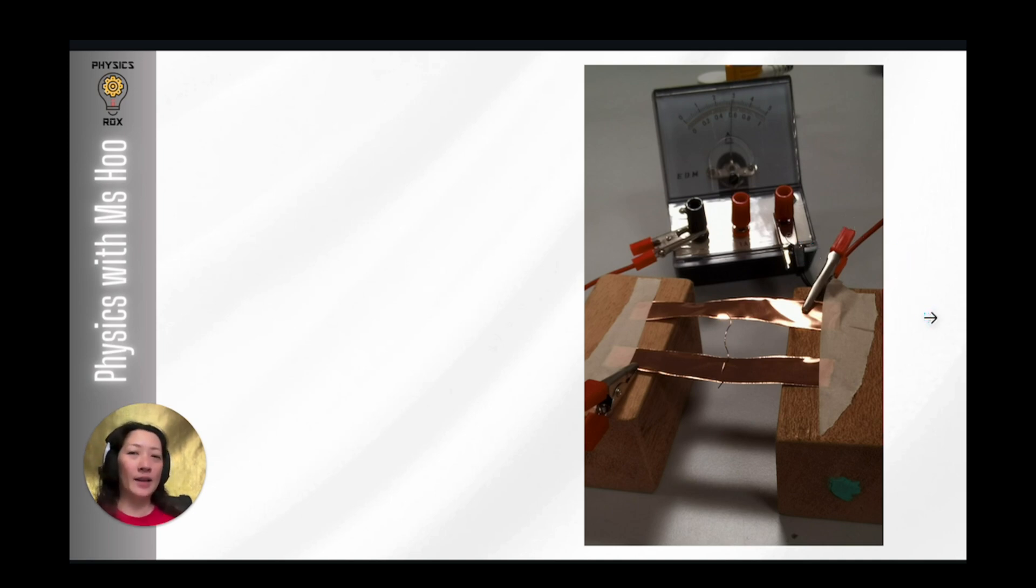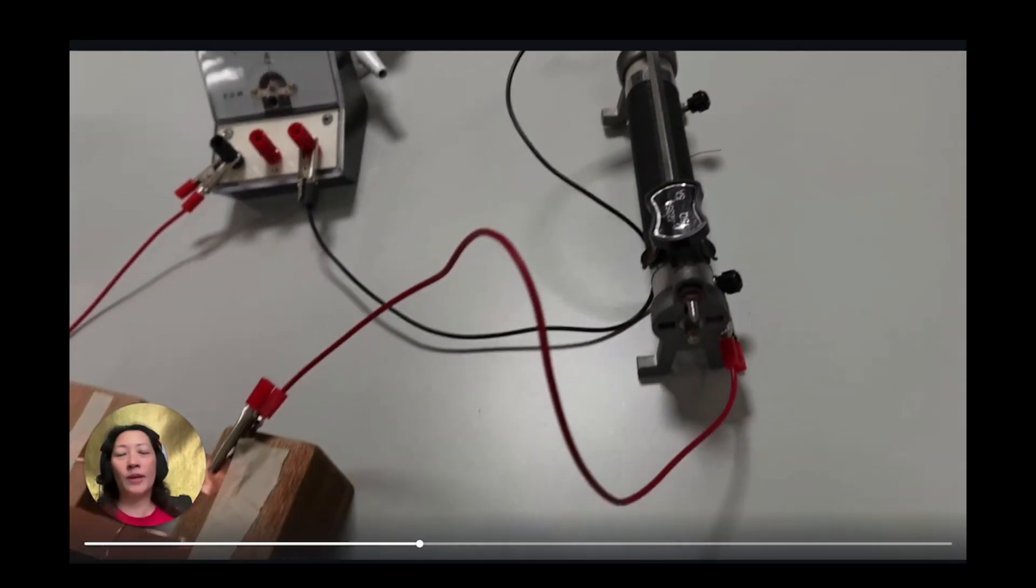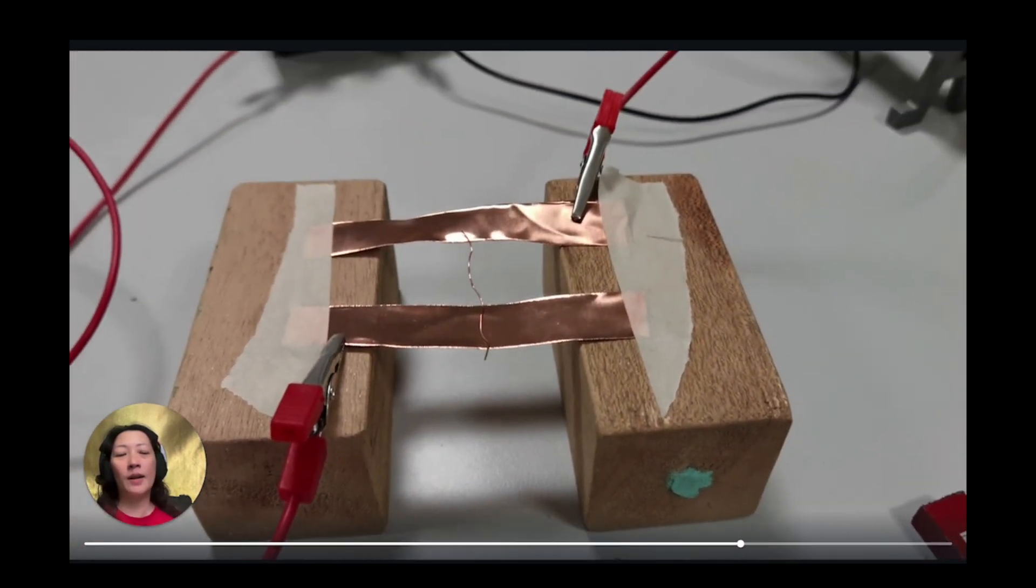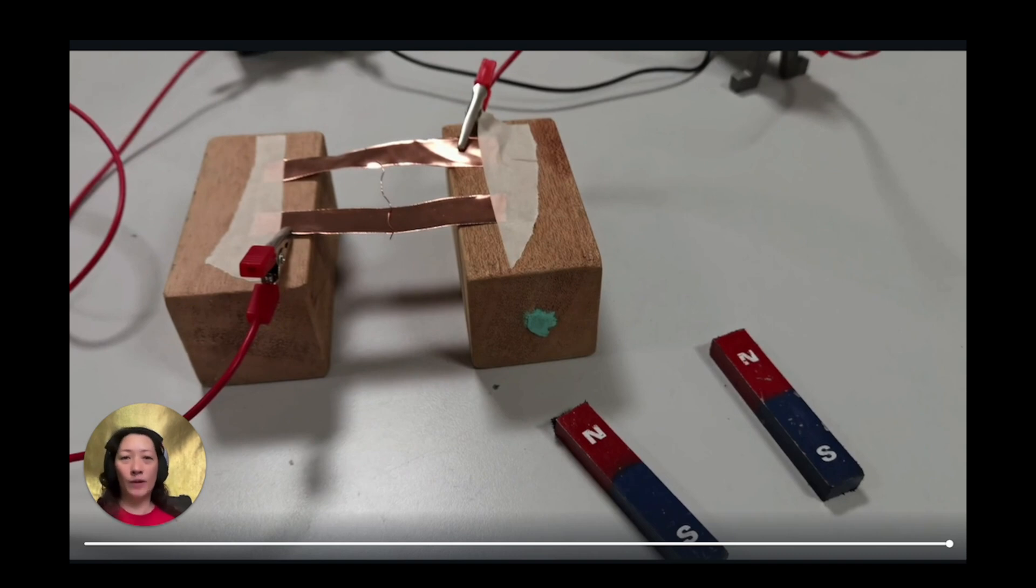Before we take a look at the movement of the wire let's have a closer look at the setup. We have the direct current power supply, the ammeter showing the current reading, the rheostat, the copper strips and the loose piece of wire and 2 bar magnets. To observe the movement of the wire I'll be holding the bar magnets freely placing one above and the other below the loose wire to observe the movement. Let's watch.